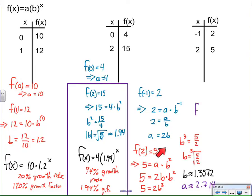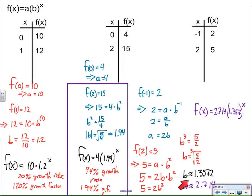Some of you are unfamiliar with cube roots — it's the same as square roots, only we're looking for what number times itself three times, not twice. You can find it in your calculator under the math button. I take the cube root of 2.5 and get 1.3572. Then I double that because a equals twice b, and I place that value in. The growth rate in this case is about 35.7% and a growth factor of 135.7%.